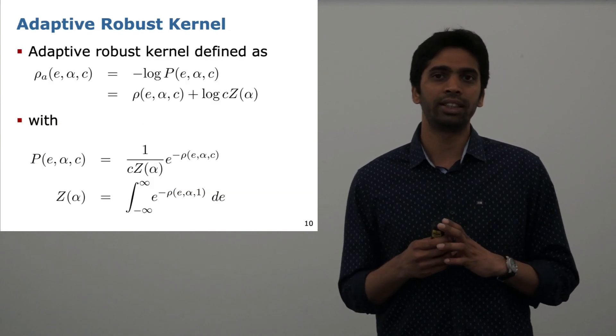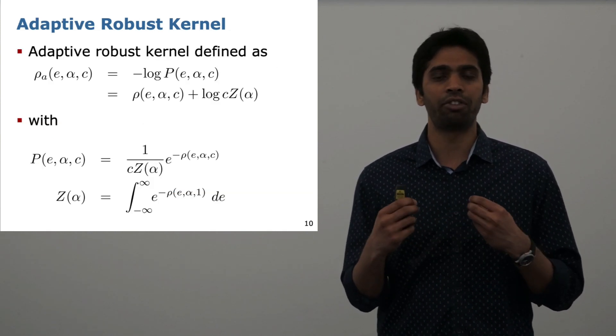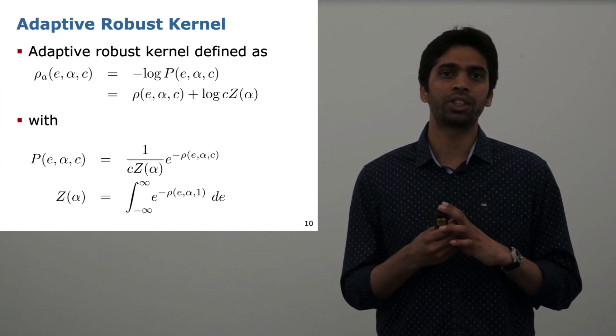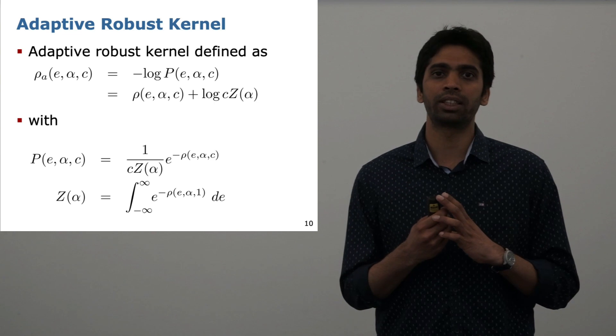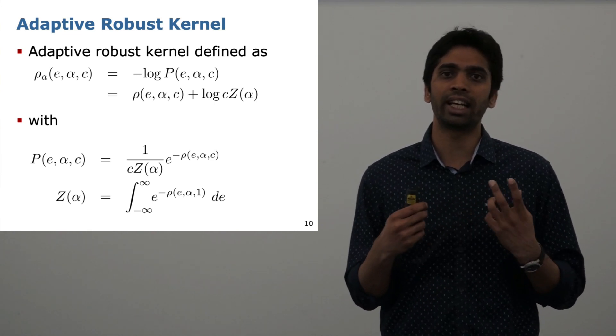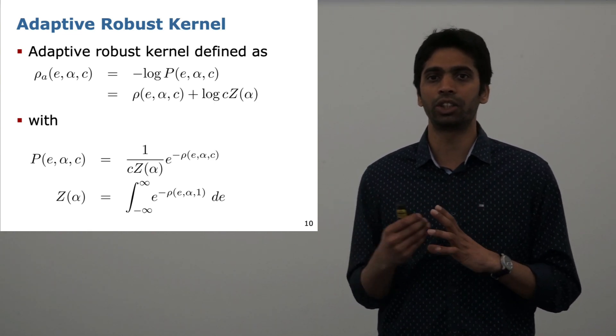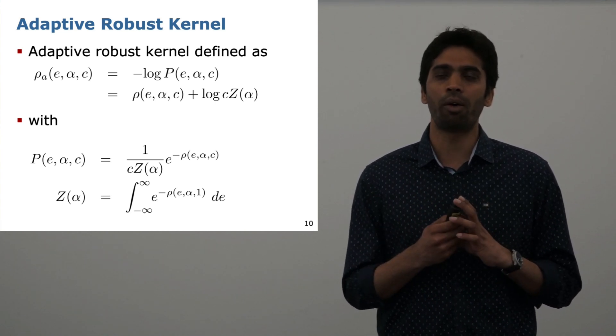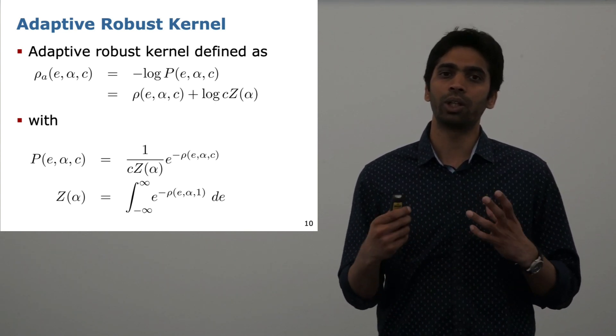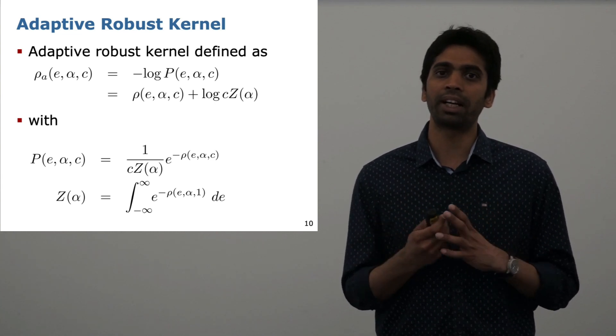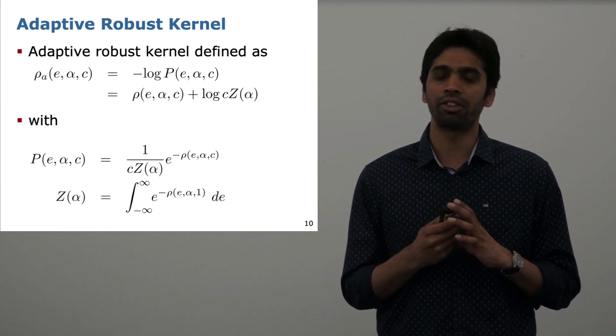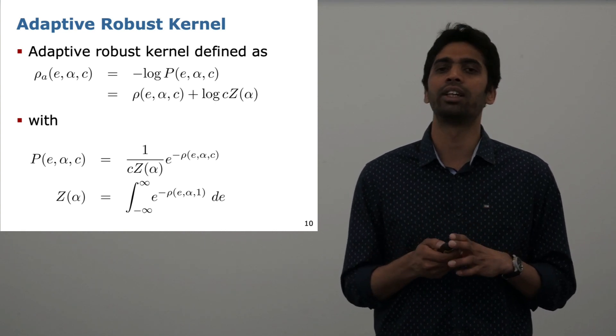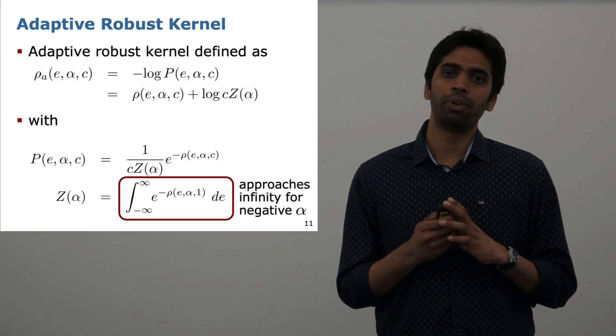To turn this generalized kernel into an adaptive one where the alpha can be changed on the go, Barron proposes to use an adaptive robust kernel obtained by taking the negative log likelihood of a probability distribution function. This probability distribution function is defined using the formula shown in the slides. It also consists of a function called the partition function denoted by Z of alpha, which is an integral of a function from minus infinity to plus infinity.